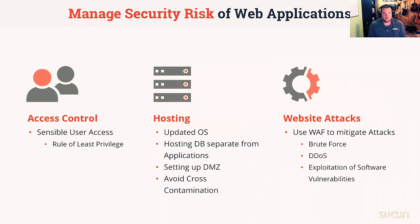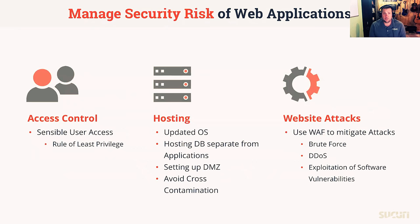So how can we manage the risk of security risk for web applications? A few high-level ways include access control — just like you would on the network — using sensible user access and applying the rule of least privilege. For hosting and host servers, make sure the OS is updated, separating databases from applications, and setting up DMZs to avoid cross-contamination. Our specialty is website attacks, and this is where you can use a CWAF to mitigate brute force, DDoS attacks, and exploitation of software vulnerabilities.